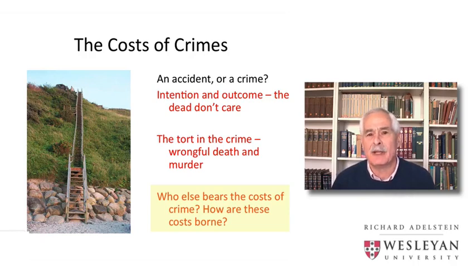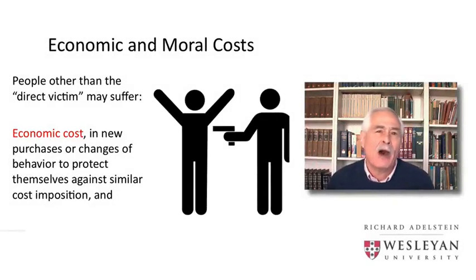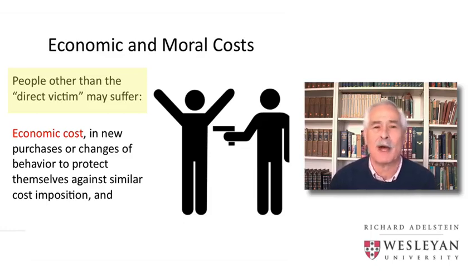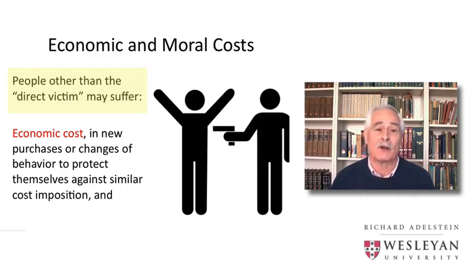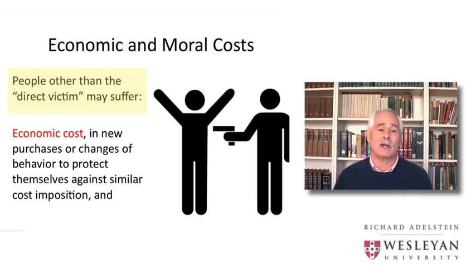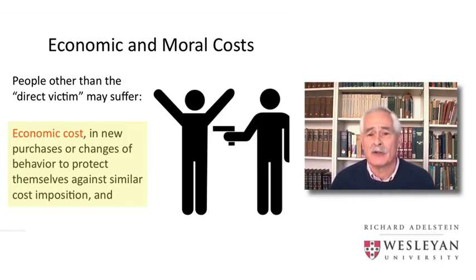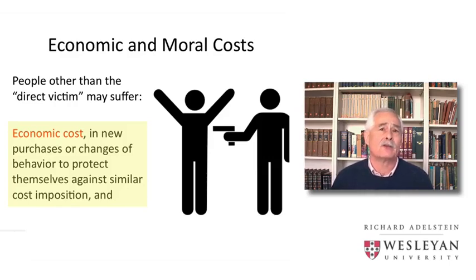The murder imposes costs on more than just the individual who has suffered the direct harm of the act itself. So the question is: who else bears the costs of crime, and how do these other cost bearers bear those costs? How may people other than what we might call the direct victim of a crime suffer? The direct victim is the one who has suffered the economic cost of the wrongful death at my hands. But other people may also suffer economic costs as a result of my crime — for example, if your neighbors are now frightened of me, they may put locks on their doors, get a gun, and alter their lives to account for the danger that I will commit the same crime against them.